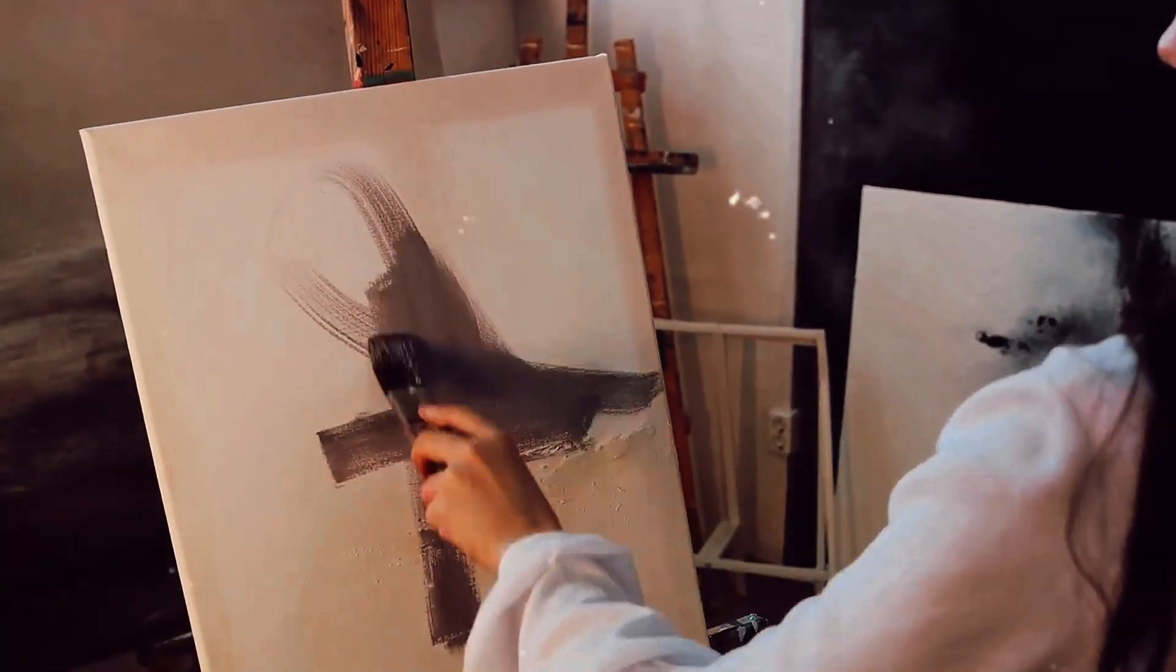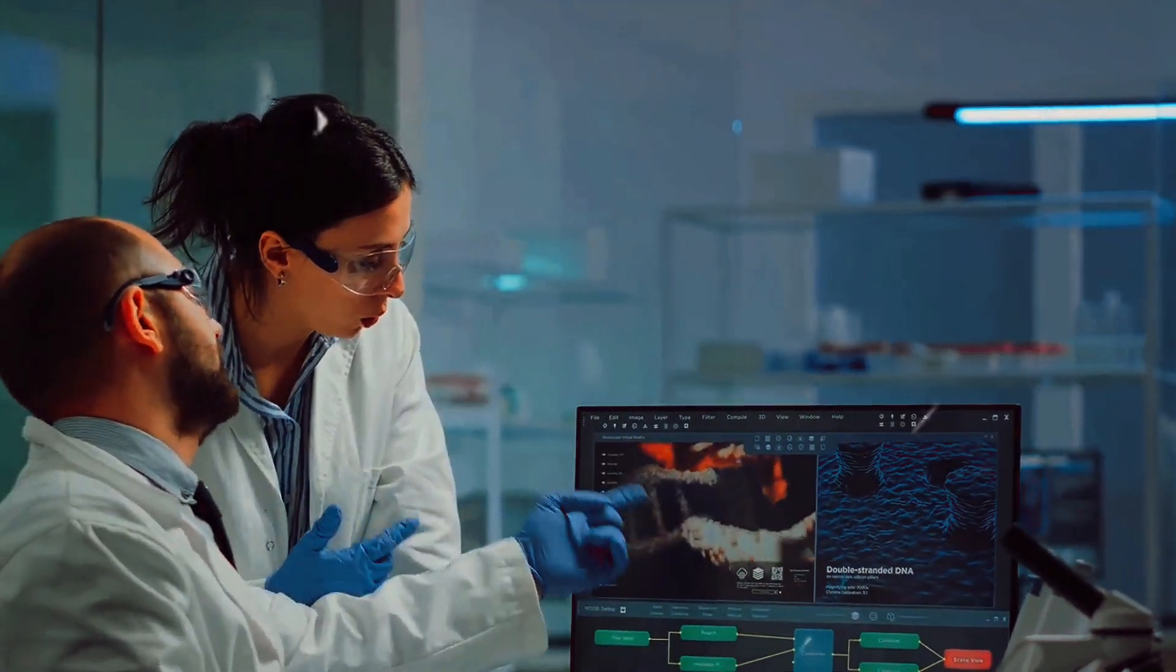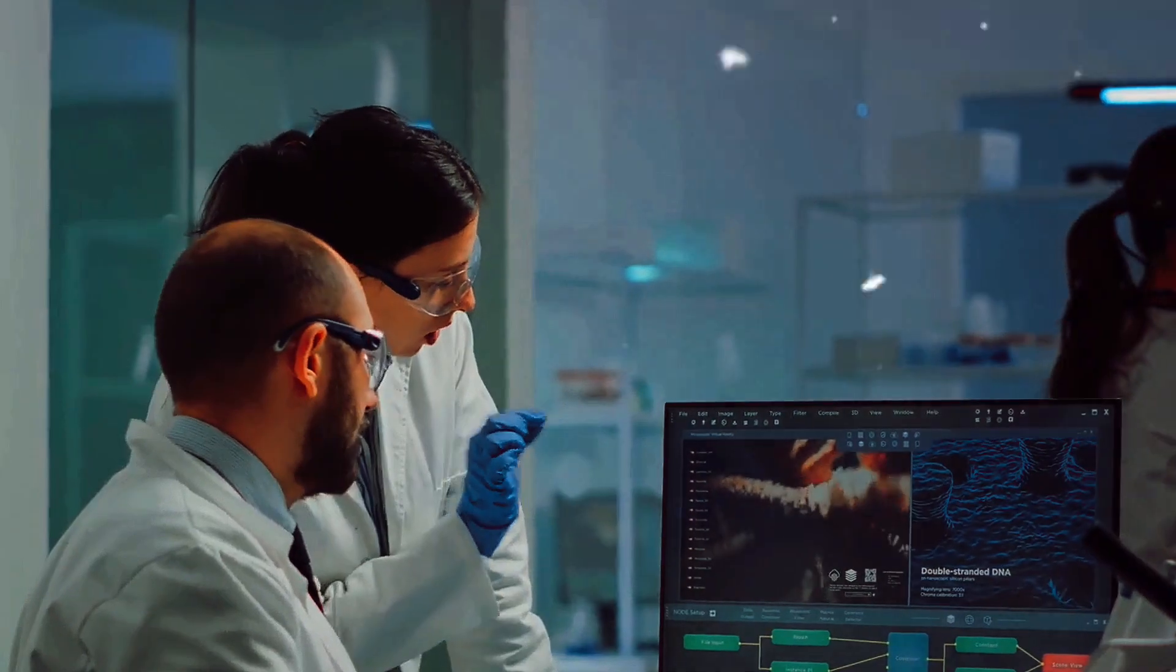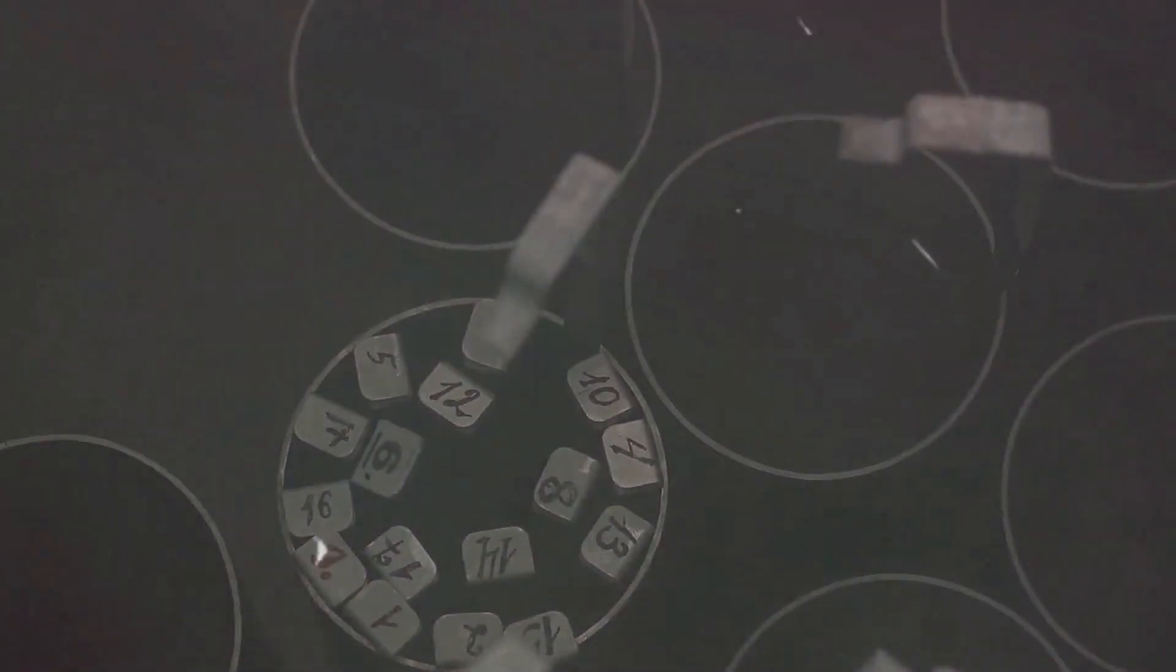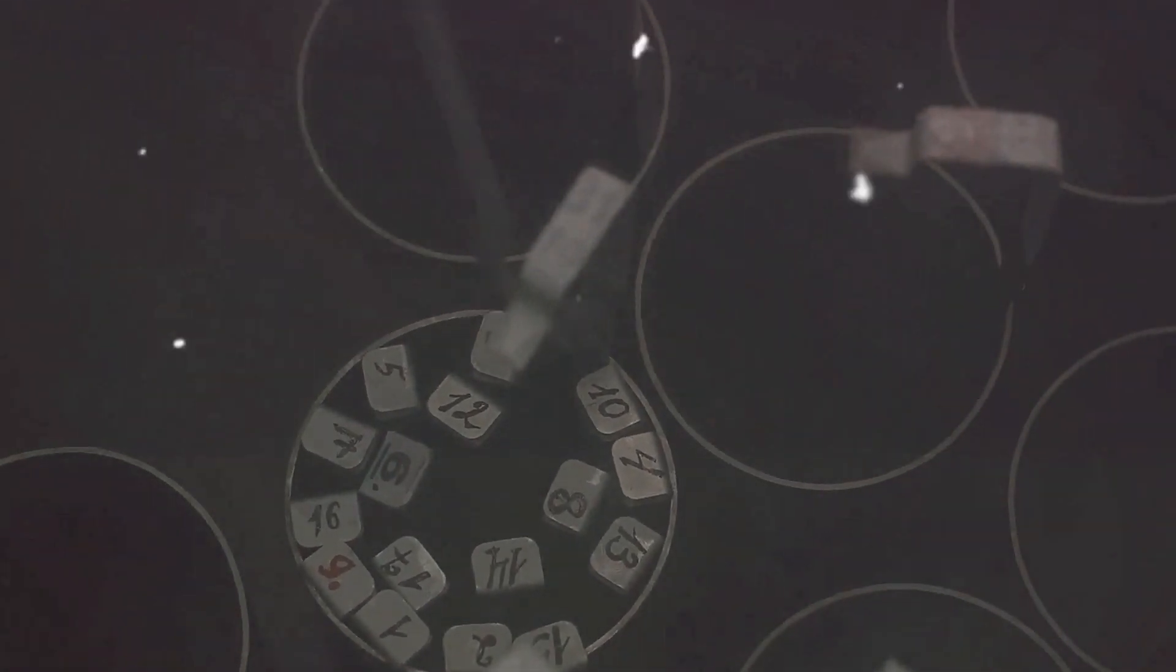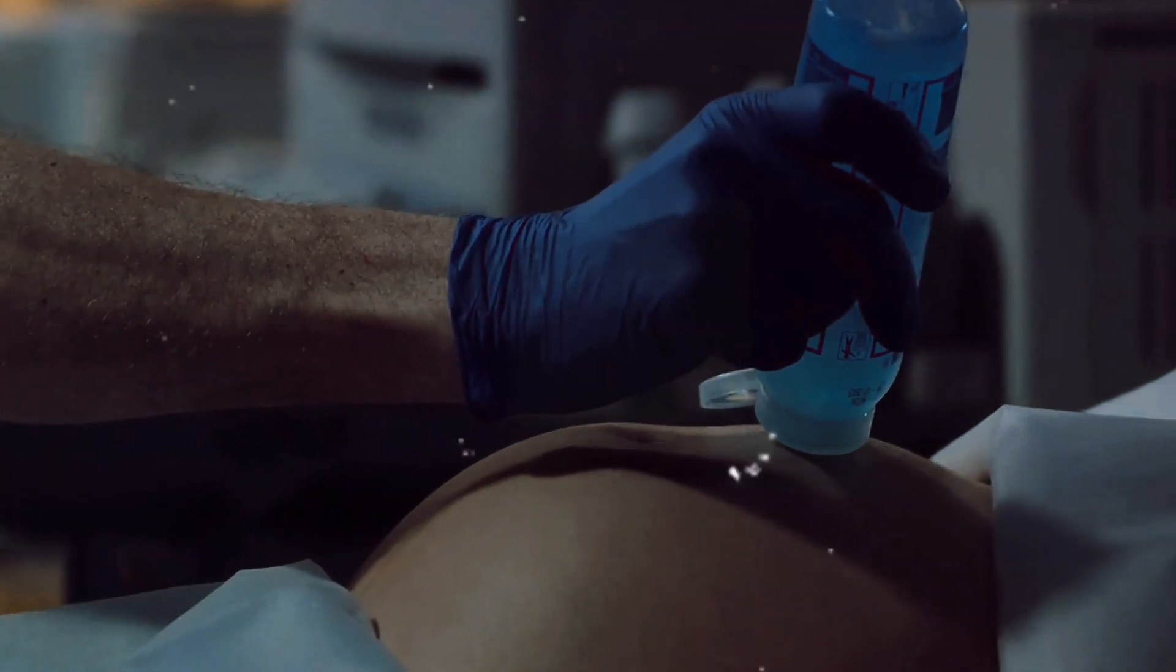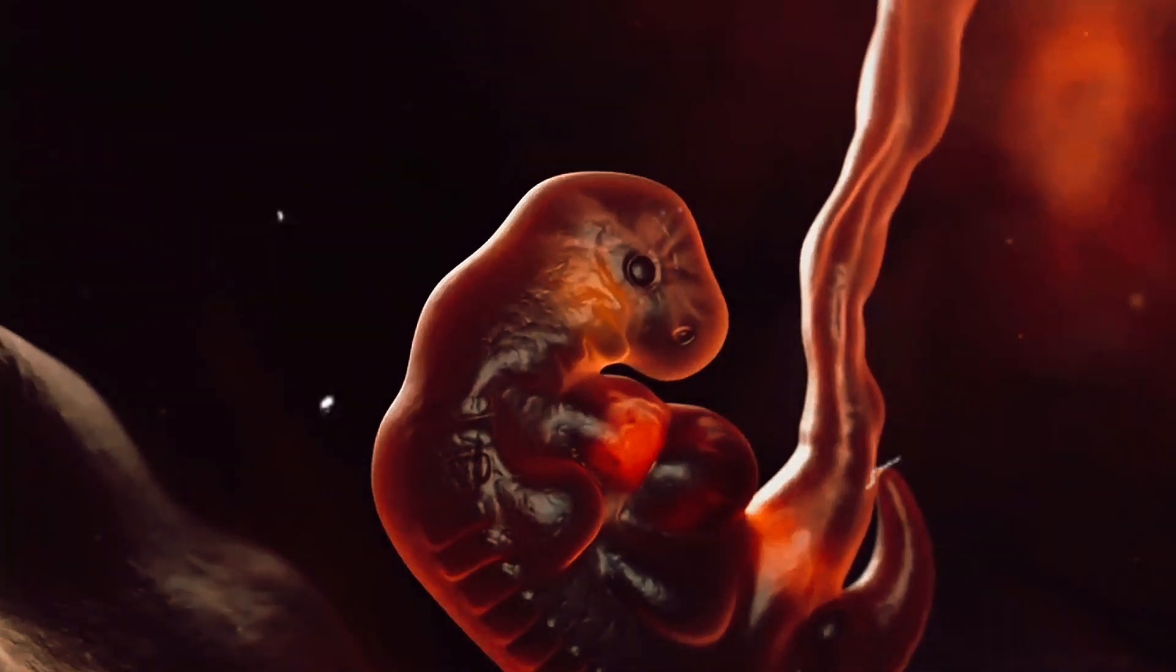The final step in the cloning process is the implantation of the new cell into a surrogate. This stage is essentially the same as in vitro fertilization. The newly formed embryo, a genetic copy of the original donor, is transferred into the uterus of a surrogate mother. It's here where the magic of life truly begins. The embryo attaches itself to the uterine wall, a process called implantation.